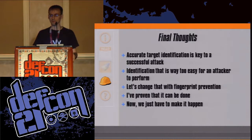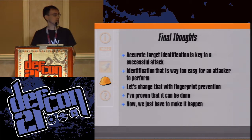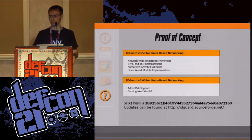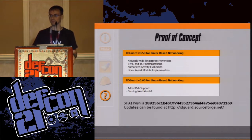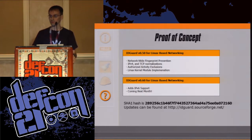Some final thoughts: accurate target identification is key to a successful attack — and it is way too easy to perform right now. Let's change that with fingerprint prevention. I've proven it can be done. The proof of concept will be available this afternoon — version 0.5, with IPv4 support. Version 0.6 will be out in about a month, which will include IPv6 support. A version after that will handle application layer queries. The SHA-1 hash is displayed here, and the POC will be available as source at that location, along with an OpenWRT package soon.